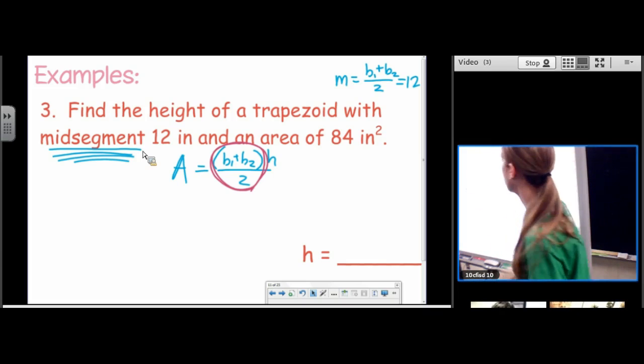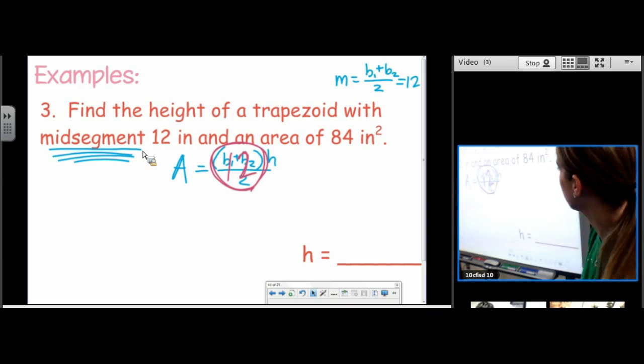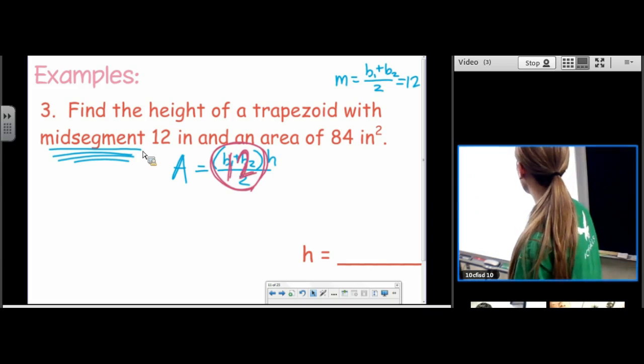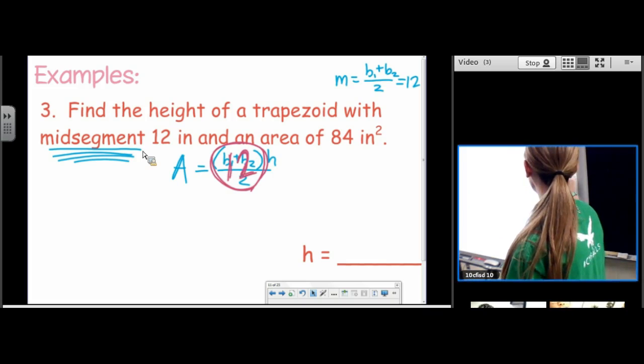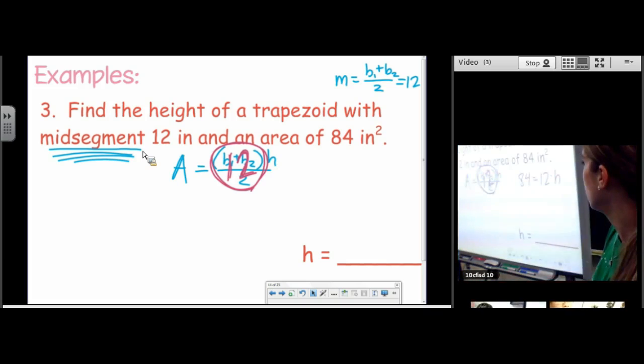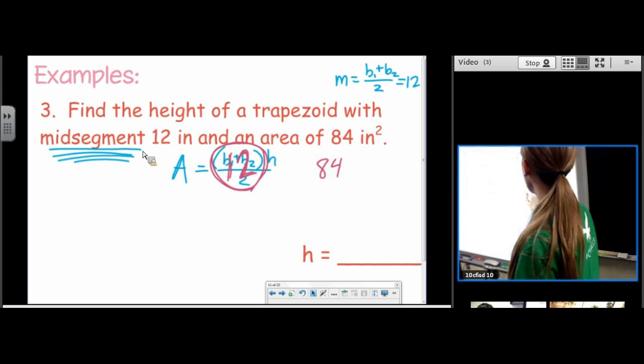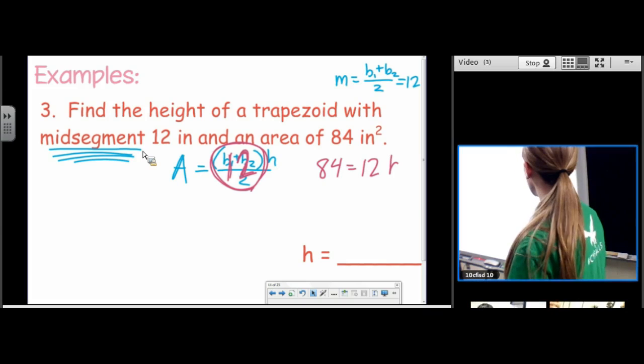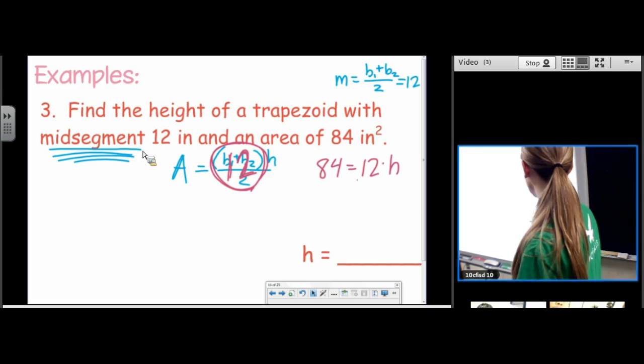That's the mid-segment. It's the average of the bases. So the area, 84, is just 12 times h. Divide by 12, divide by 12. The height of that trapezoid is 7 inches.